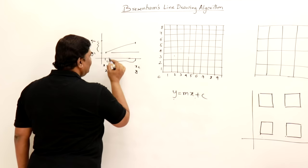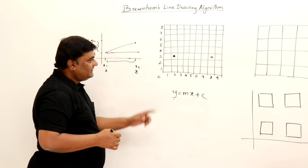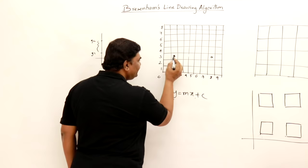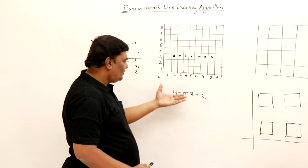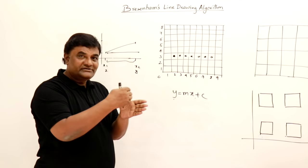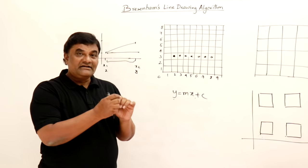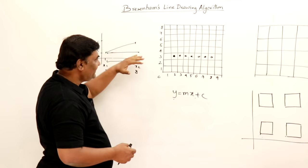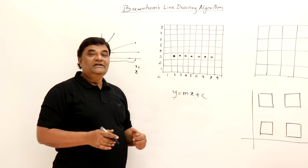For a horizontal line from x=2 to x=8, sampling x gives y=3 for every step — the slope is 0 and y doesn't change. For a 45-degree line from (1,1) to (8,8), both x and y increment equally: 1,1 → 2,2 → 3,3, and so on. For lines with slope less than 1 we sample x; for slope greater than 1 we sample y.